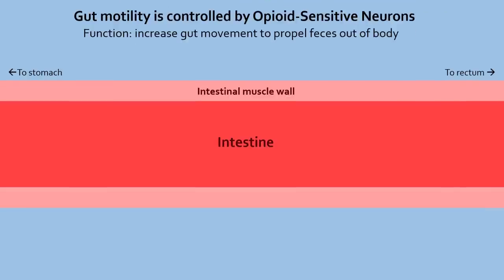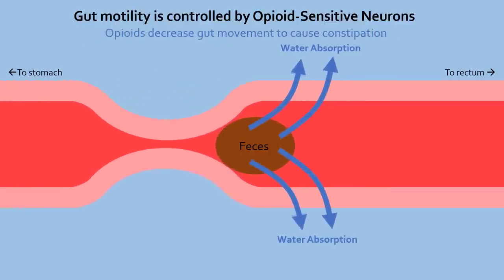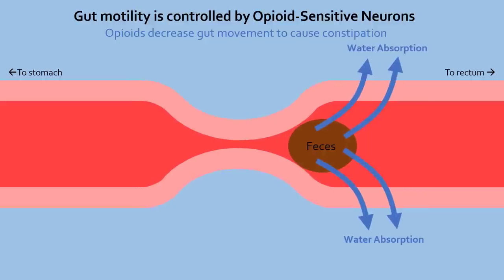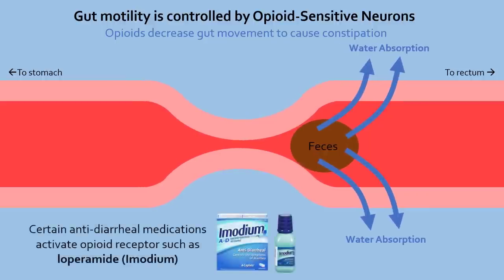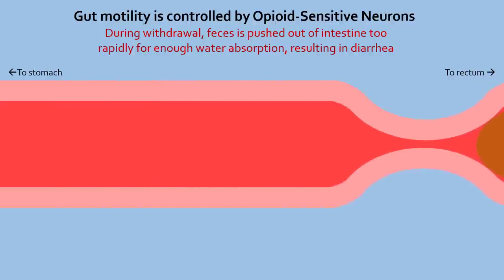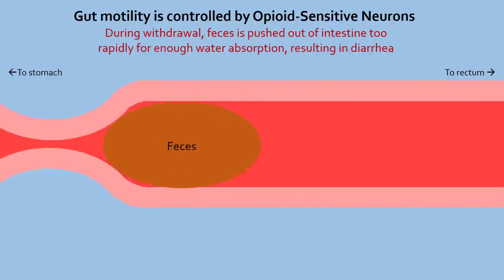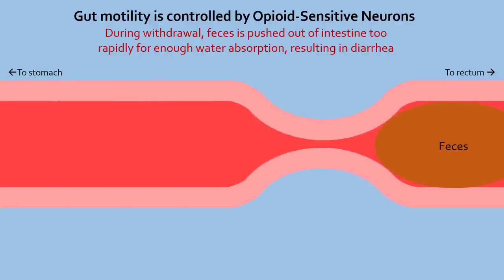Certain neurons in the intestines cause gut movement to push contents out. When these neurons are inhibited by opioids, gut movement slows down to cause constipation — a common side effect of opioid use. This side effect is taken advantage of by certain antidiarrheal drugs such as loperamide, which activate opioid receptors. During withdrawal, gut movement becomes so rapid that contents are propelled out of the intestine before sufficient water is absorbed, resulting in a common opioid withdrawal symptom: diarrhea.